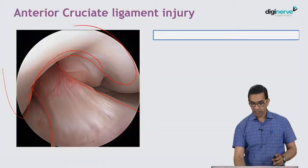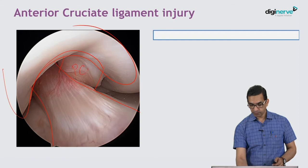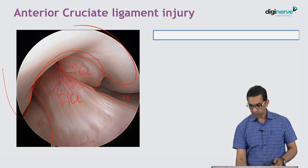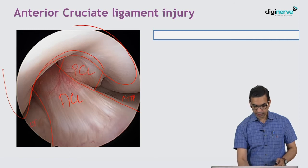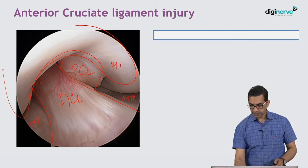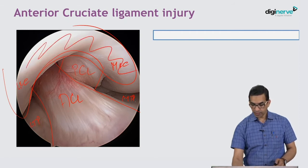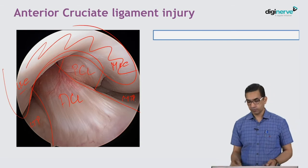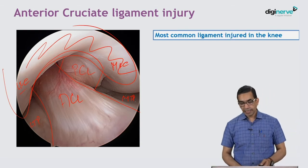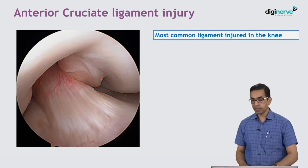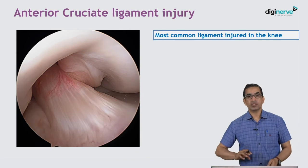In this image, hidden under the synovium is the PCL, and this is the ACL. You can see the medial tibial plateau, lateral tibial plateau, medial femoral condyle, lateral femoral condyle, and the white covering which is the hyaline cartilage. The ACL is the most commonly completely ruptured ligament.